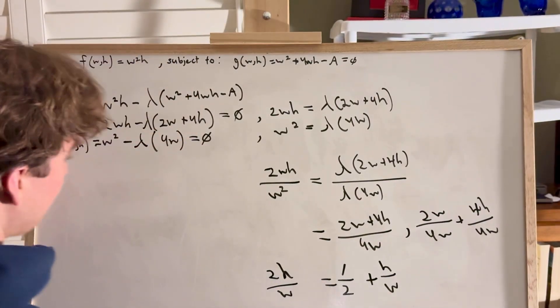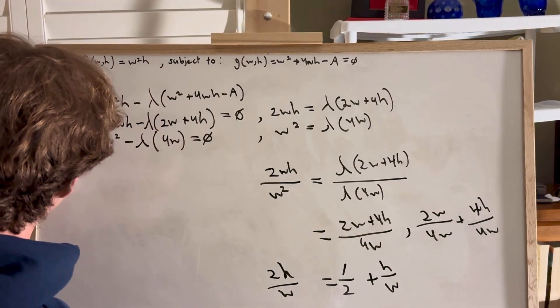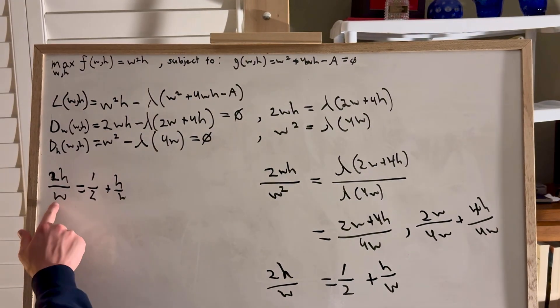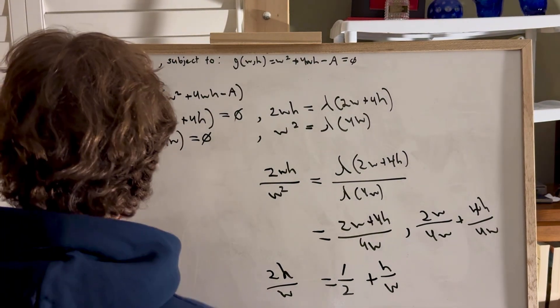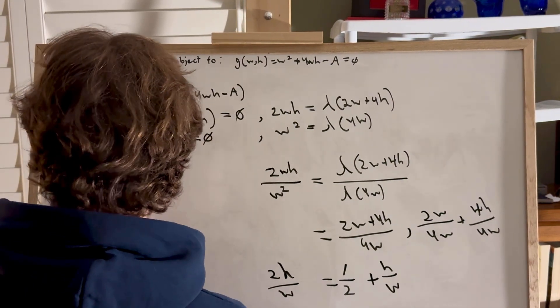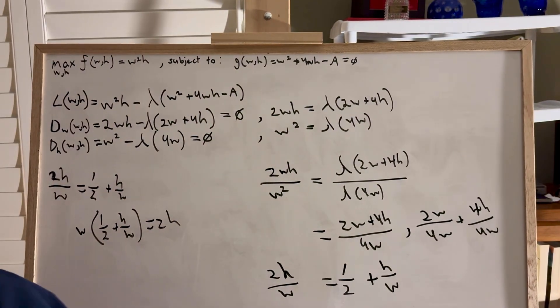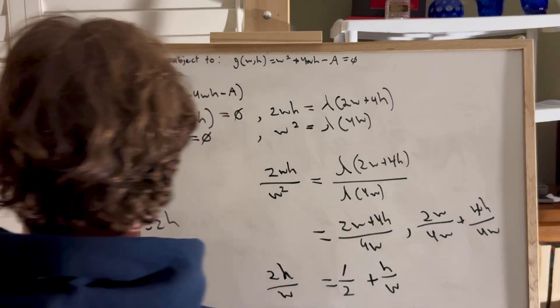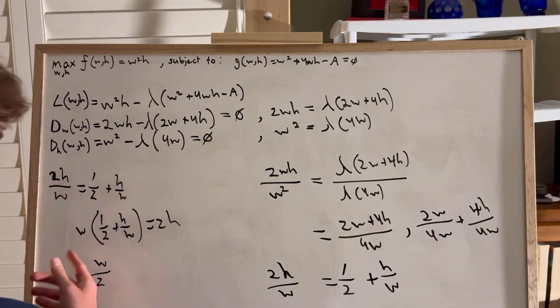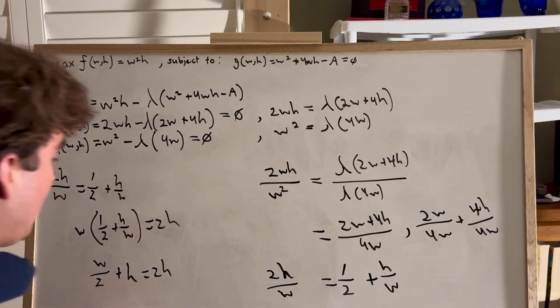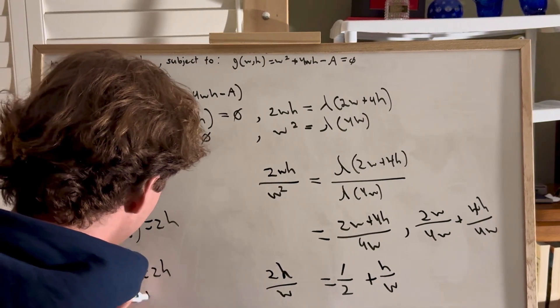But we can simplify this even further. You have 2h over w equals 1 half plus h over w. We're going to multiply this by w. So you have this times w, 1 half plus h over w equals 2h. Well, sorry, sorry, thing on the floor. Didn't mean to disturb you. Didn't mean to distribute that late in the night.